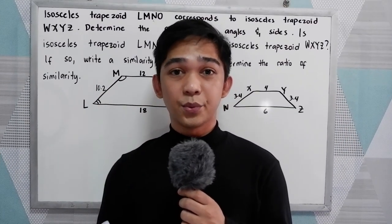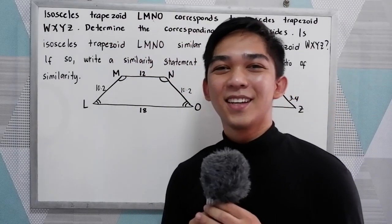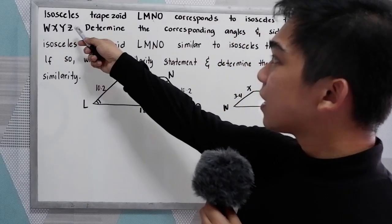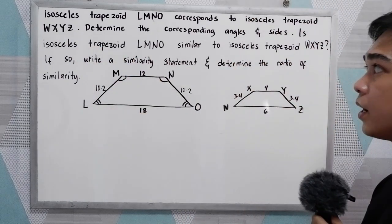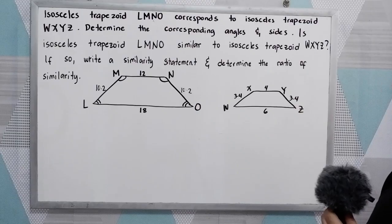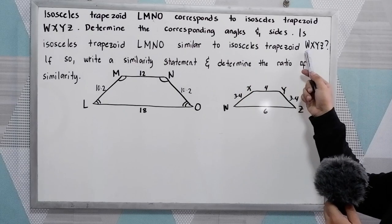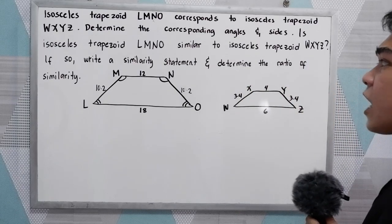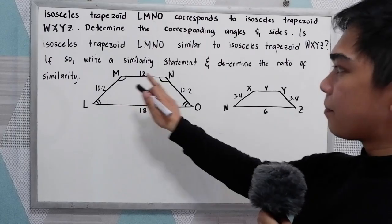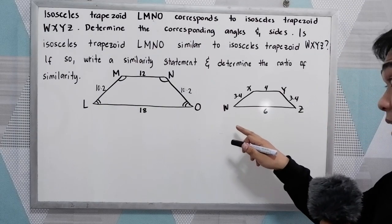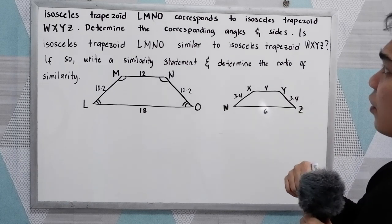Let's have example number 2. Isosceles trapezoid LMNO corresponds to isosceles trapezoid WXYZ. We are asked to write a similarity statement and determine the ratio of similarity. So we have trapezoid LMNO and isosceles trapezoid WXYZ. First, let us determine the corresponding angles and sides.